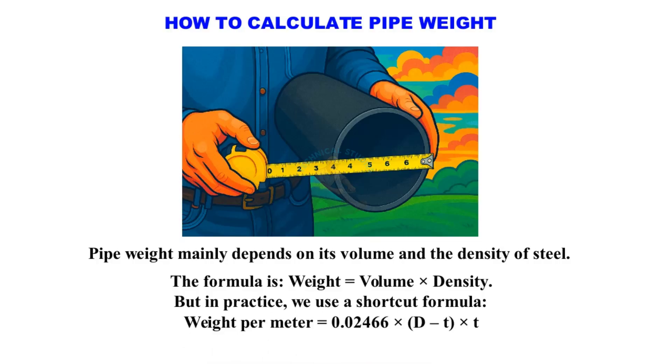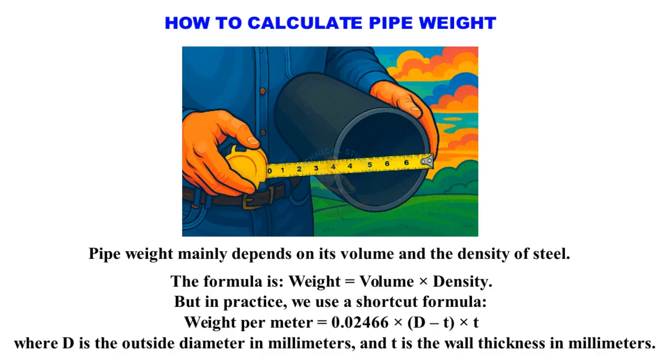Weight per meter equals 0.02466 times d minus t times t. Where d is the outside diameter in millimeters and t is the wall thickness in millimeters.